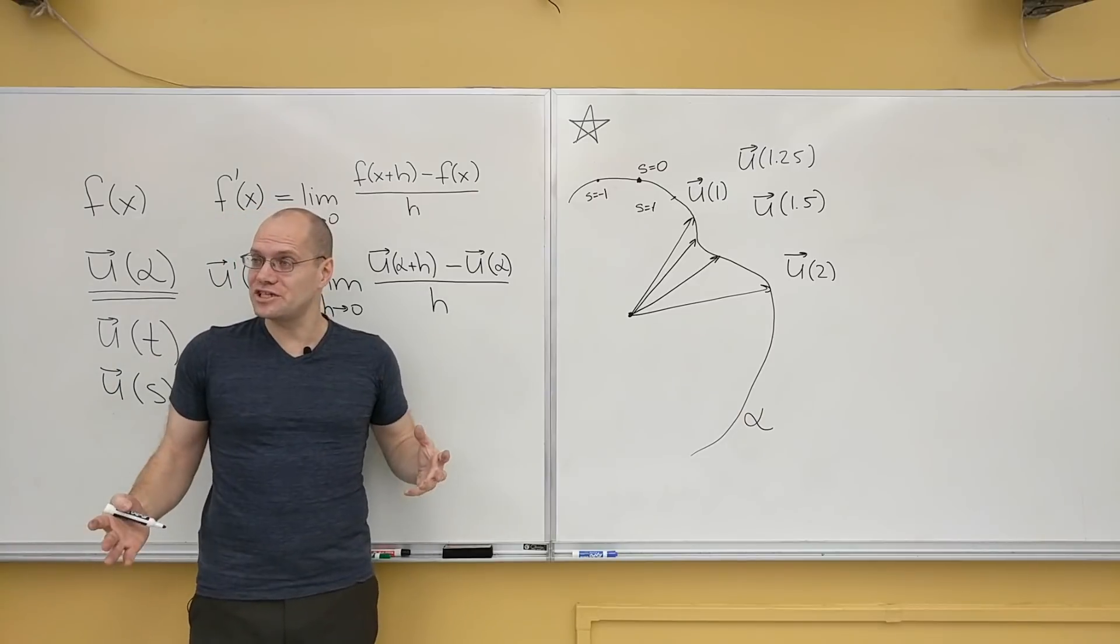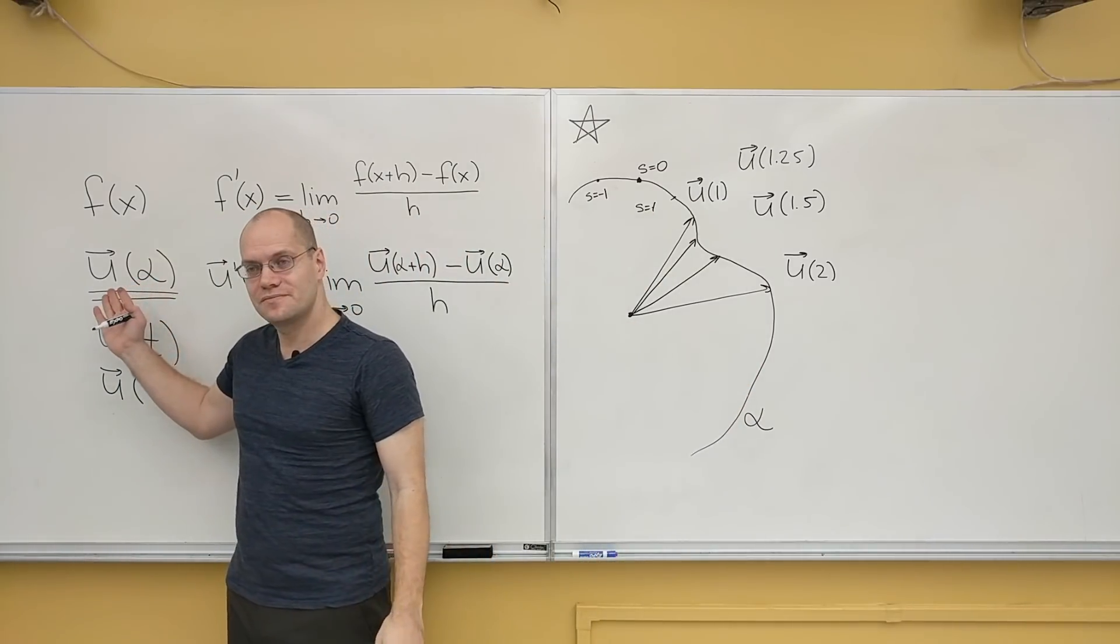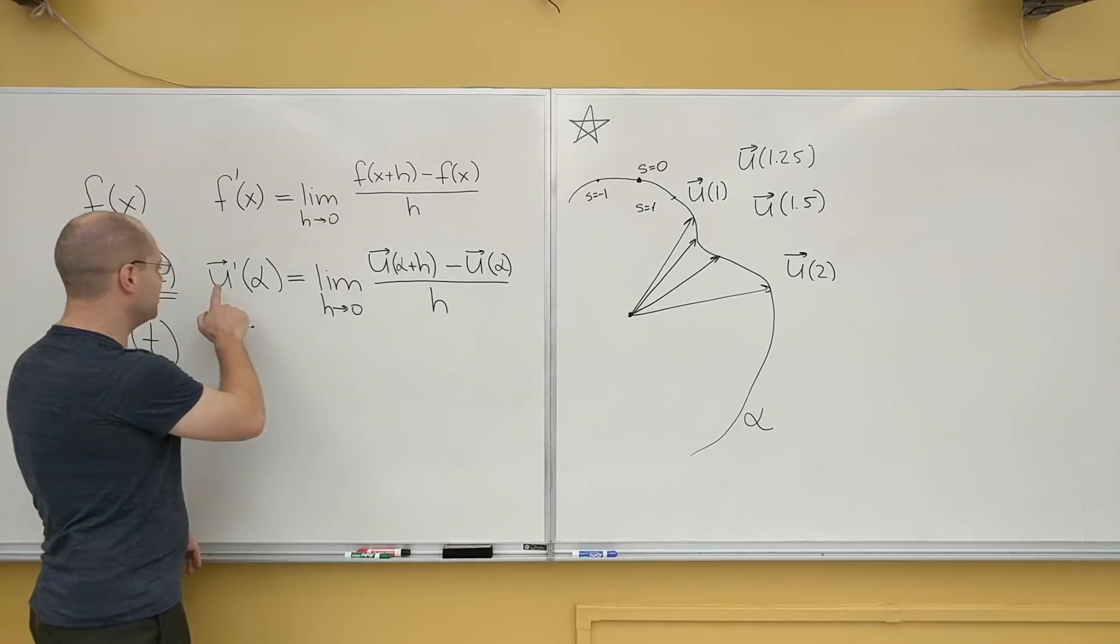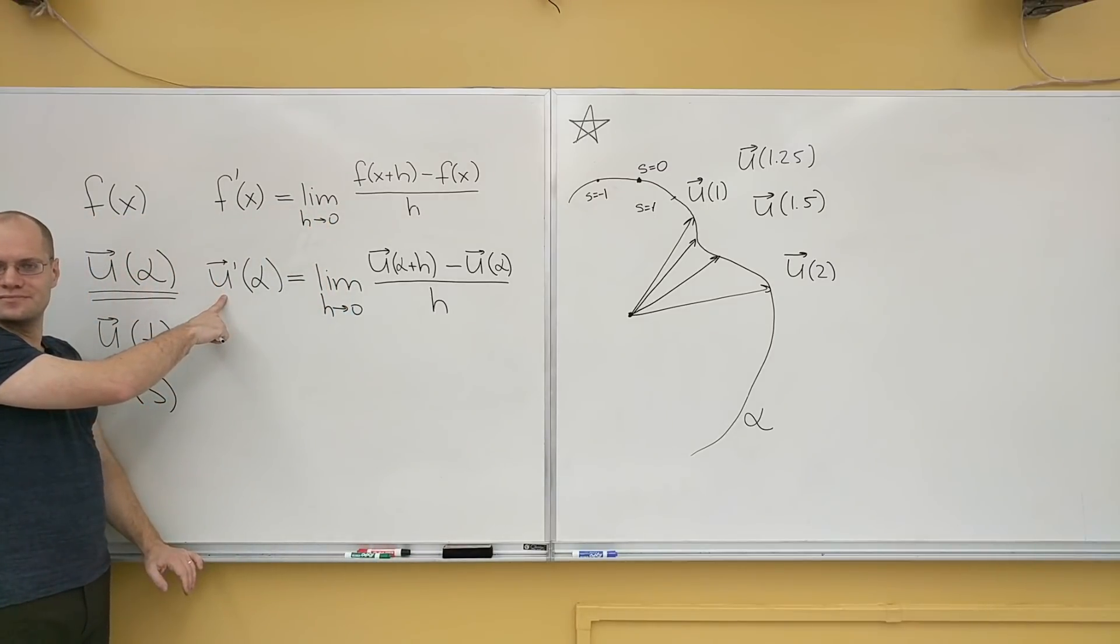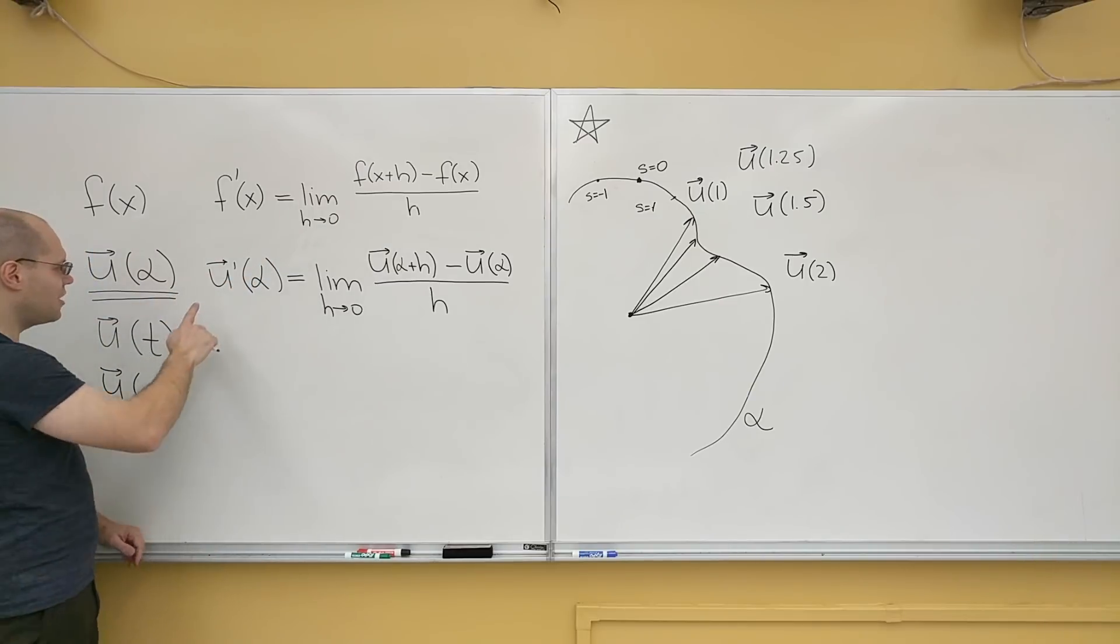So a very natural question is that if we have this interpretation for a vector-valued function, what is the interpretation for this? And for that we just have to start drawing pictures. Let me erase that and pick a nicer curve, and then talk about what u prime of alpha might represent.